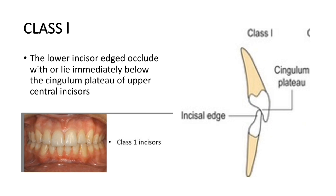In Class 1 incisor relationship, the lower incisor edges occlude with or lie immediately below the cingulum plateau of the upper central incisors. On the right side in the given picture, you can see the cingulum plateau and the edge of the lower incisor. The side view and the clinical picture below show the Class 1 incisor relationship.